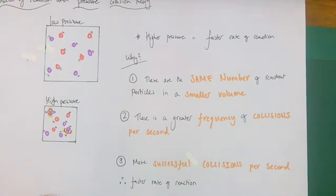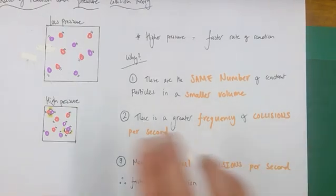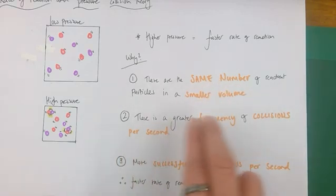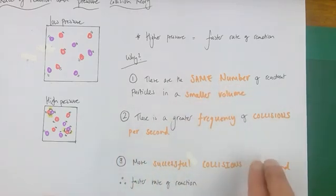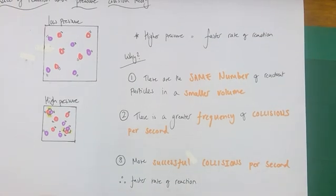Again, try and avoid using the word chance or probability because it's not really favoured. It's not really the thing we want to hear. Try and focus on the factual idea that there are more collisions per second occurring and there are more successful collisions per second occurring as a result of that. And that's what makes the rate of reaction faster.